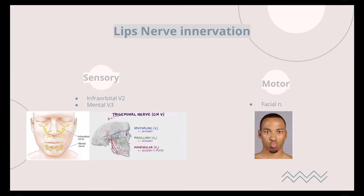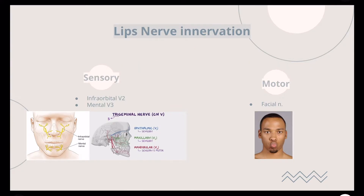What is the nerve innervation of the lips? As with any area, we have motor and sensory. The motor: the orbicularis oris muscle is supplied by the facial nerve. The function of the orbicularis oris is closure or blowing of the lips or mouth. The sensory is supplied mainly by the trigeminal nerve.